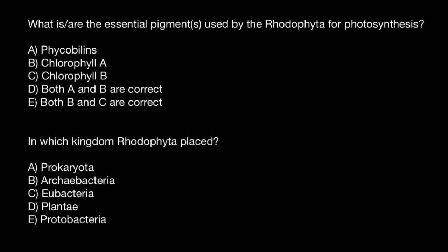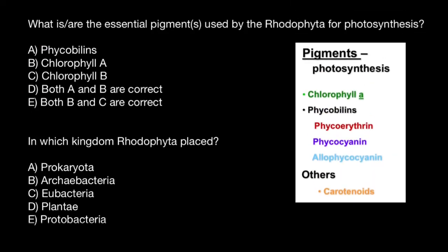Hello and welcome to Nikolai's genetics lessons. Today I have prepared two multiple choice questions for you. The first question is: what is or are the essential pigments used by the Rhodophyta for photosynthesis? Rhodophyta is a red algae. Here are the variants to choose from — take a look at this picture which lists all the essential photosynthetic pigments.